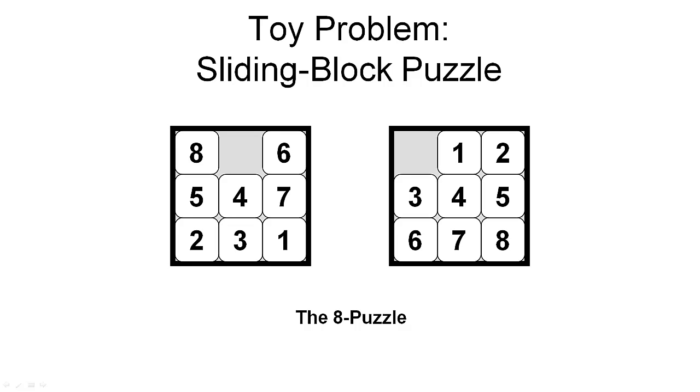What we have is a grid, here it's a 3 by 3 grid. In this grid we have 8 tiles, so one square remains empty. We can then shift the tiles in the grid, but of course we can only shift them into the empty slot, leaving another slot empty as a result.